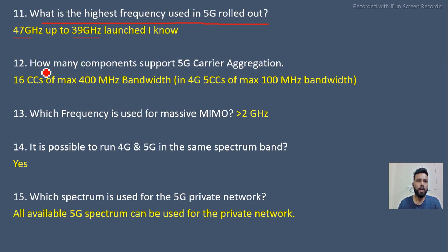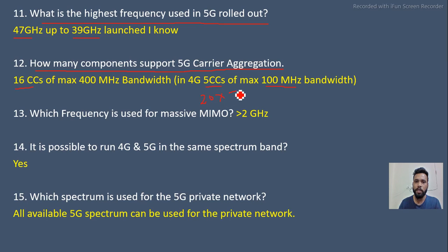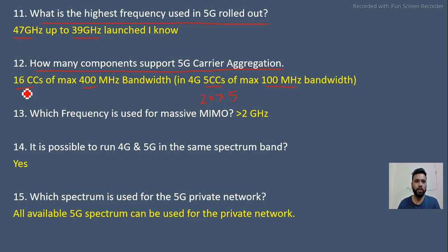Next question: how many component carriers does 5G carrier aggregation support? In 4G, we had 5 component carriers, giving a maximum aggregated bandwidth of 100 MHz (5 × 20 MHz). In 5G, we have 16 component carriers. Since the maximum bandwidth per carrier in 5G is 400 MHz, after aggregating 16 component carriers we can achieve up to 400 MHz total bandwidth.